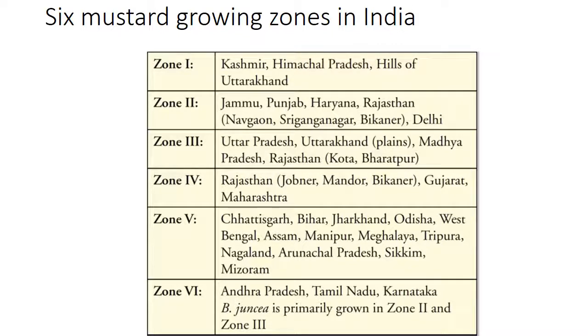Brassica juncea is primarily grown in Zone 2 and Zone 3, i.e., the Indian mustard growing belt.